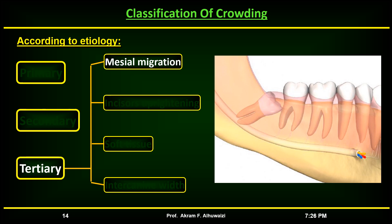Regarding mesial migration of the posterior teeth owing to forces from the eruption of the third molars, this has a weak relation with the development of late lower anterior crowding. Furthermore, crowding can still develop in patients with congenitally missing third molars. Therefore, the prophylactic removal of asymptomatic third molars cannot be justified.